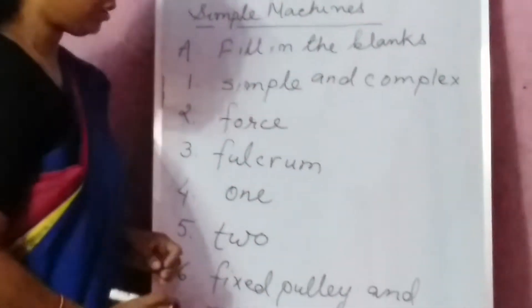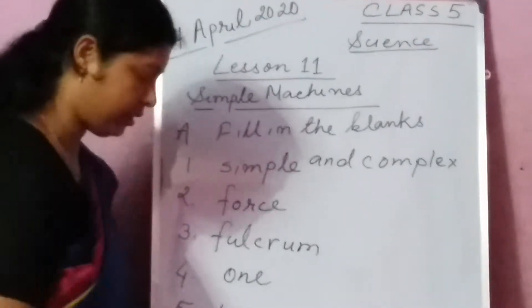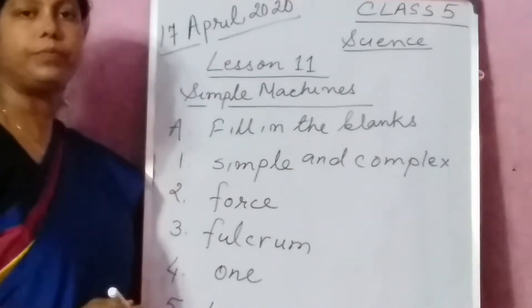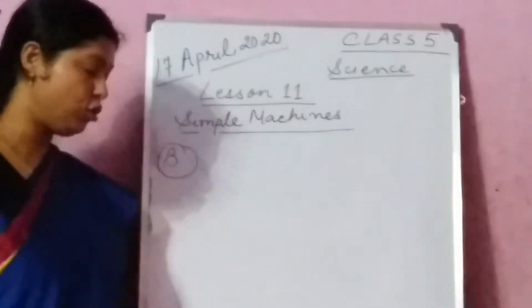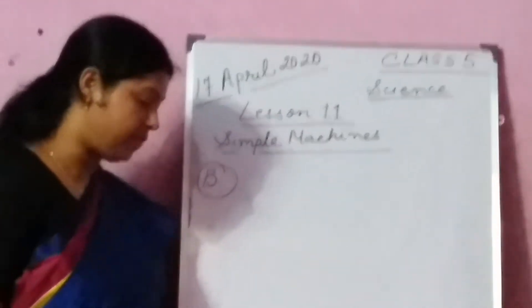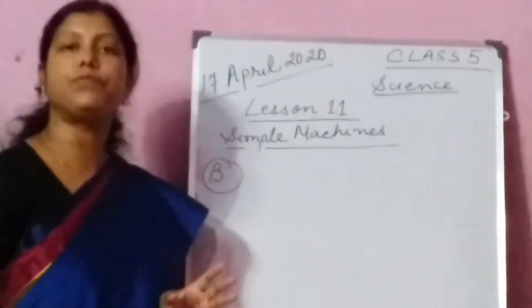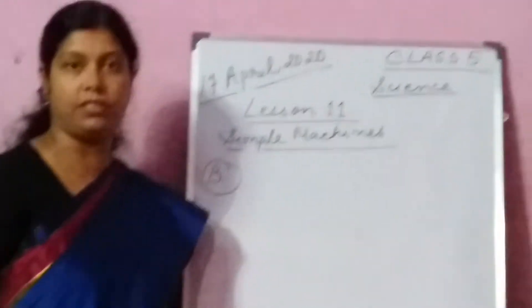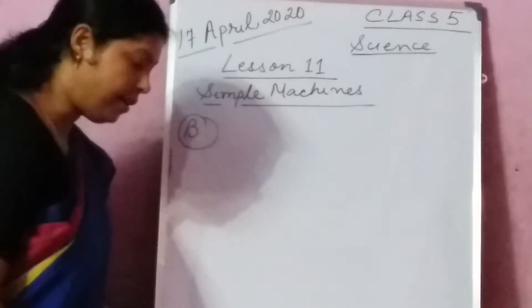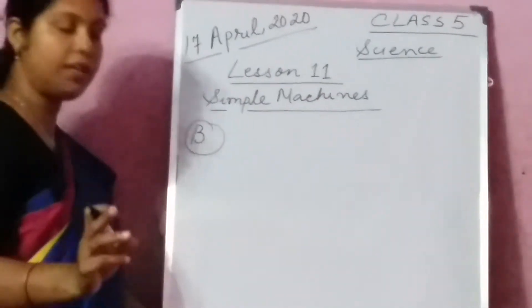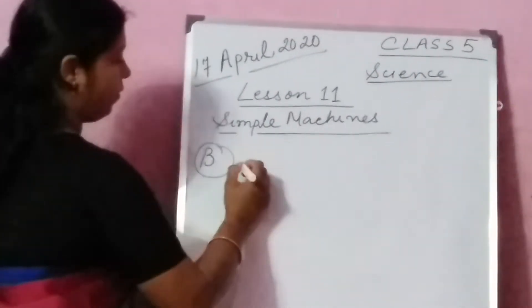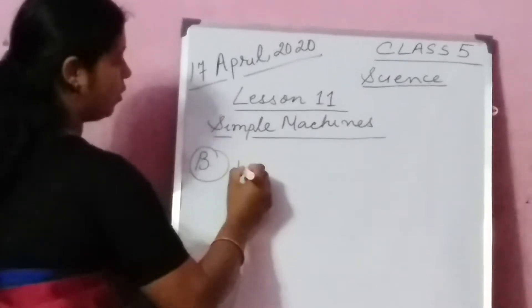Children, please copy down all these things in your copies. Now we are going to do exercise B — that is write true and false statements. But if the statement is false, we are going to correct it, so you should know the correct statement. Number 1: the longer the rod of the lever, the harder it is to move the load. It is false.